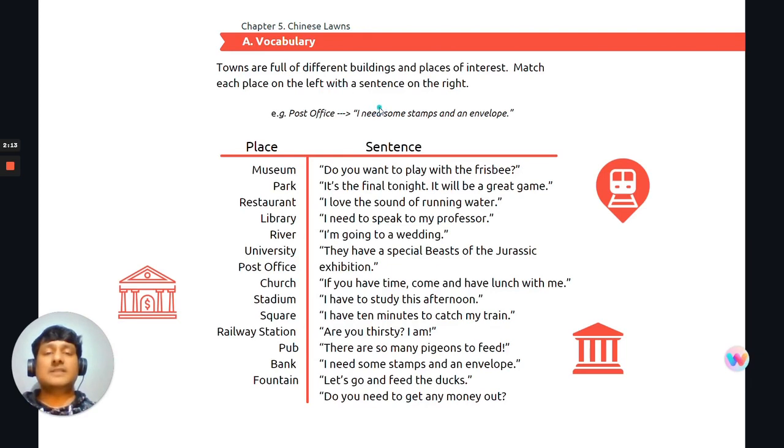Okay, so let's take a look at our sentences. The first sentence is, do you want to play with the frisbee? So if you were a sporty person, you'd probably be into this. And some people even do this with their dogs. The next one, it's the finals tonight. It will be a great game. So sometimes a group of friends get together and watch games and this instant, one could be suggesting it to a other friend or like a group of people. Okay, the next one, I love the sound of running water. So this is probably like ASMR or what ASMR is to some people. Listening, closing your eyes and just enjoying that feeling. The next one, I need to speak to my professor. So someone obviously needs to speak to their professor at the university or a place of study.